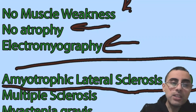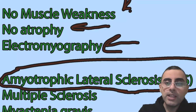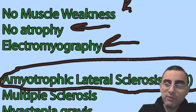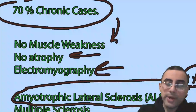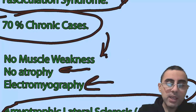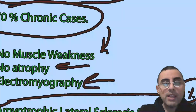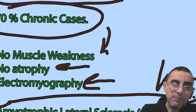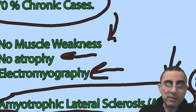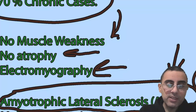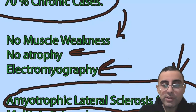Amyotrophic lateral sclerosis accounts for around 1% of fasciculation cases, so it is rare and we should not be overly afraid. However, we should be careful. In ALS cases, we also have muscle weakness and muscle atrophy, which are important because ALS is a neurodegenerative, progressive disease — the condition worsens over time.